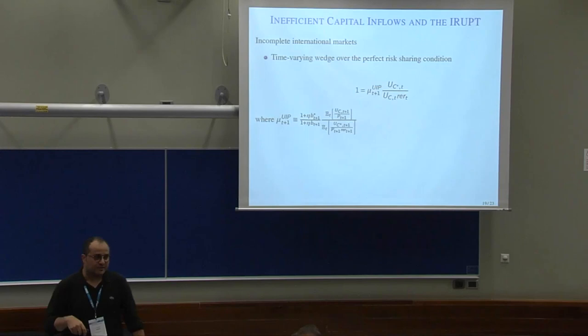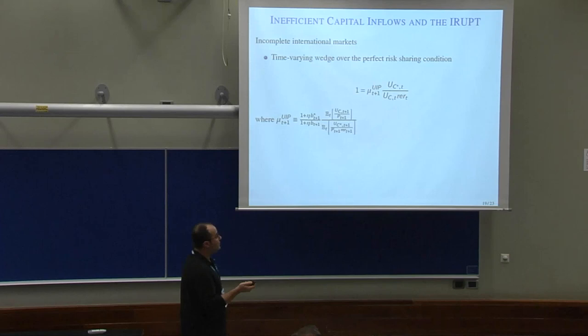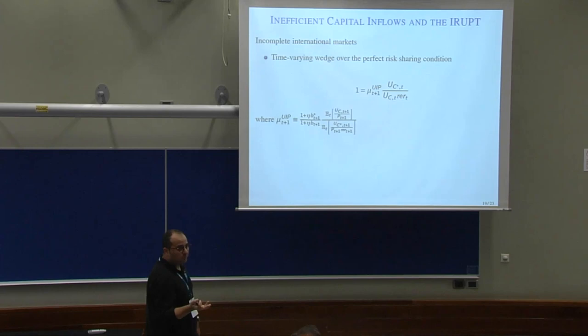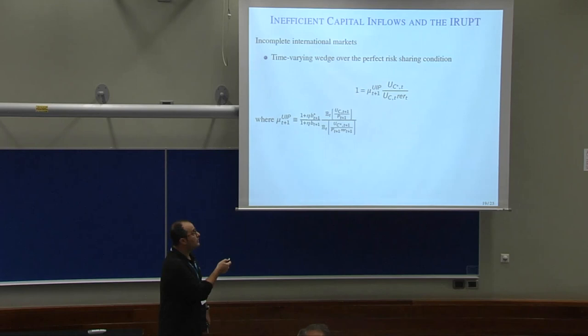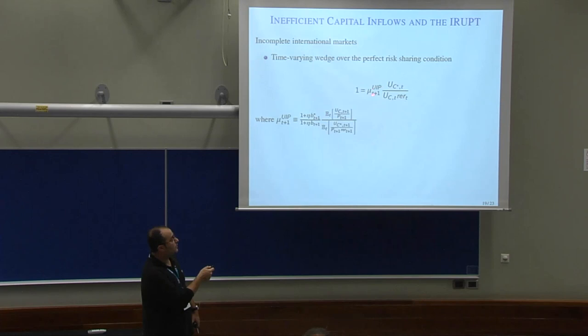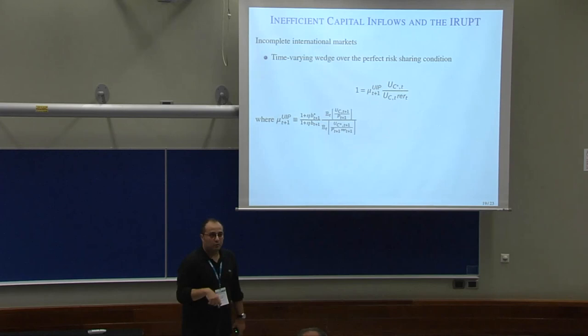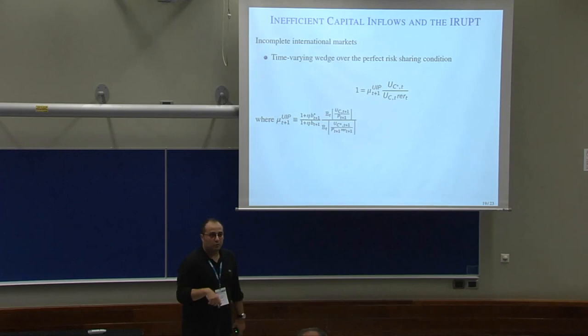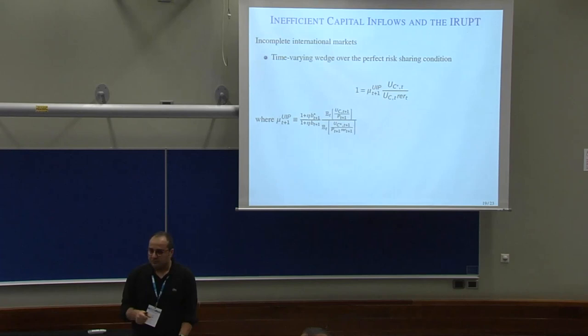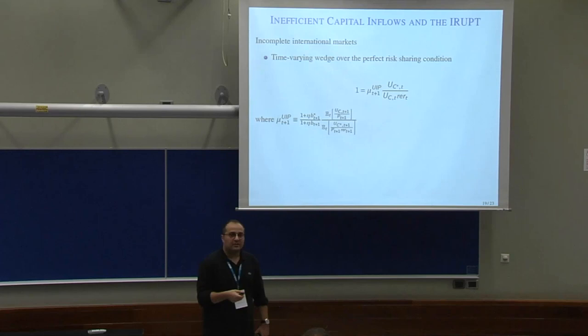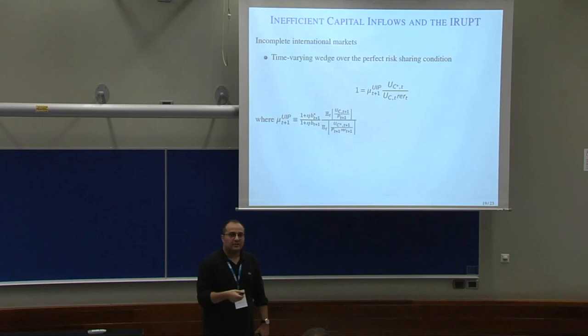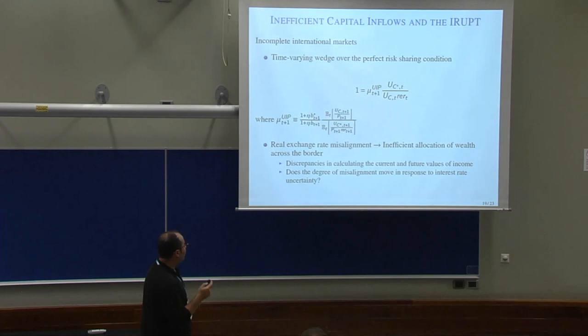As an intermediate step, regarding inefficient capital inflows and imperfect risk sharing: in a complete market framework, the ratio of marginal utilities from consumption would equal one, representing perfect risk sharing. Due to incomplete markets, we have a time-varying wedge over the perfect risk-sharing condition. In response to capital inflows, this wedge moves in one direction. If the interest rate uncertainty policy is effective in addressing inefficient capital inflows, the wedge is expected to move in the opposite direction.